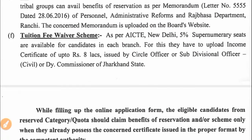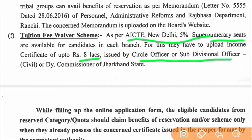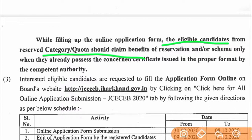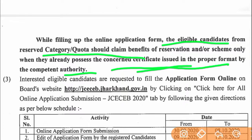For the Tuition Fee Waiver (TFW) scheme, as per AICTE norms, 5% supernumerary seats are available for eligible candidates in each branch. For this, candidates must upload an income certificate of less than ₹8 lakh, issued by a circle officer, sub-divisional officer, or deputy commissioner of Jharkhand. The certificate must show income below ₹8 lakh to be eligible for TFW. While filling the online application form, eligible candidates from reserved categories or quota should only claim benefits of reservation or scheme when they already possess the concerned certificate issued in the proper format by the competent authority.